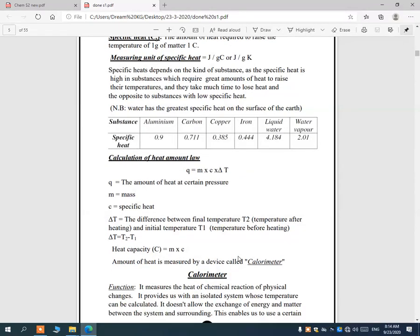But the question now, how can we calculate the amount of heat needed or released? This can be calculated from a rule which is Q equals m c delta T. Q is the amount of heat absorbed or released at a certain pressure. m is the mass. c is the specific heat. Delta T is the change in temperature, which means T2 minus T1, final temperature minus initial temperature.